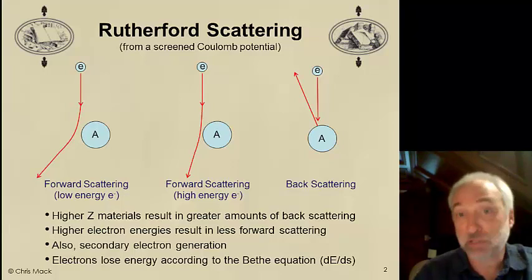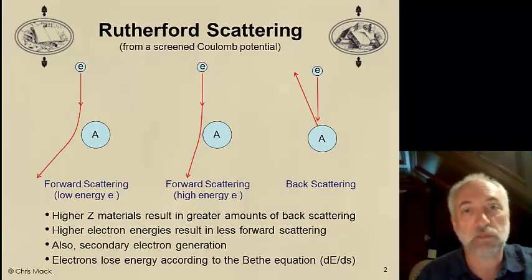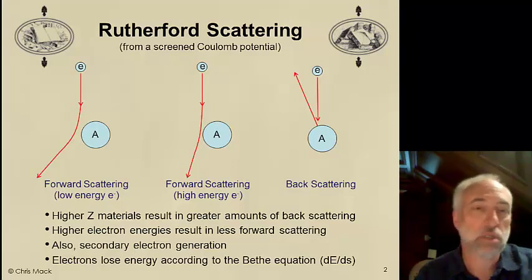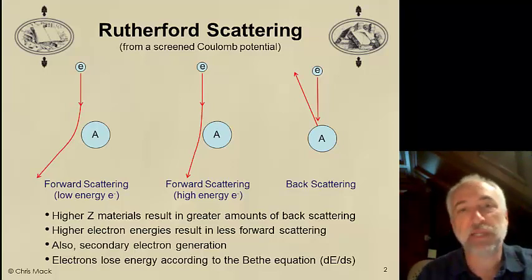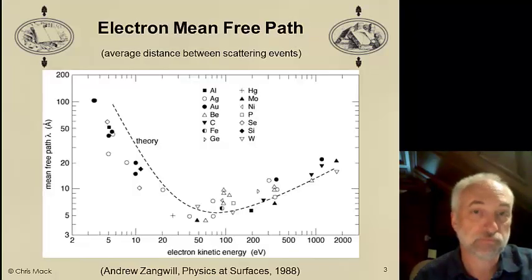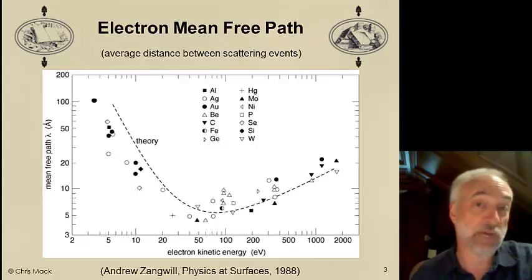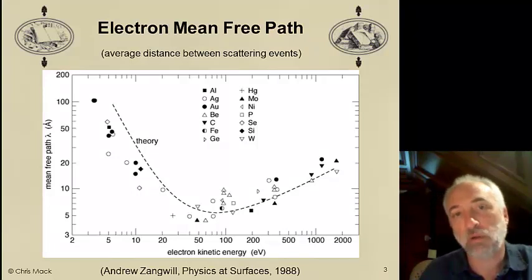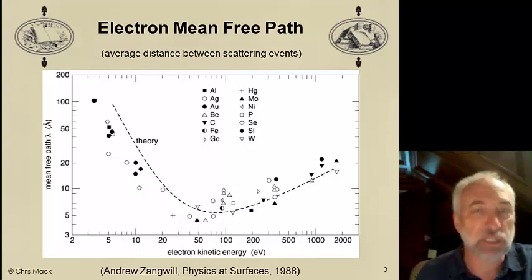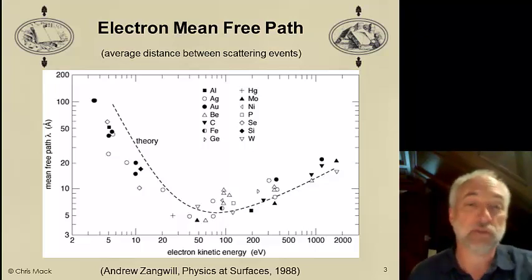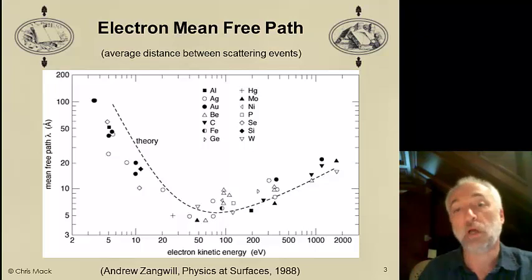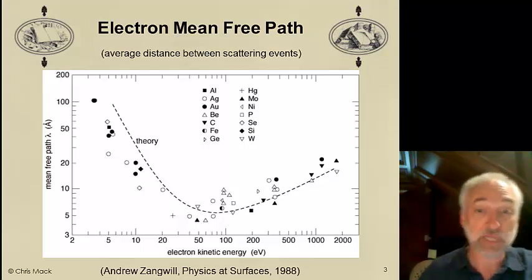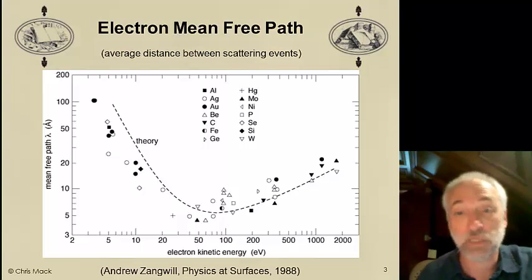There are more complications involved in this process, and we can develop fairly sophisticated models of scattering and energy loss of electrons through a material. We have a pretty good handle on how they work. Another piece of this puzzle is called the electron mean free path — the average distance between scattering events. This is a random, stochastic variable, but there is a mean value, and it's a function of the electron energy and the atomic weight of the materials involved.